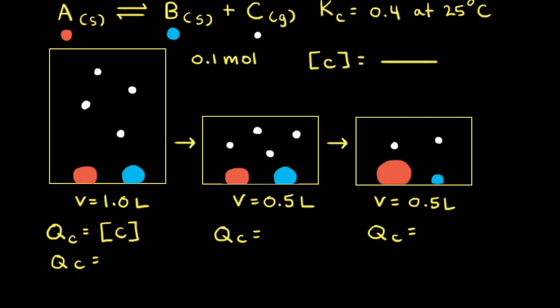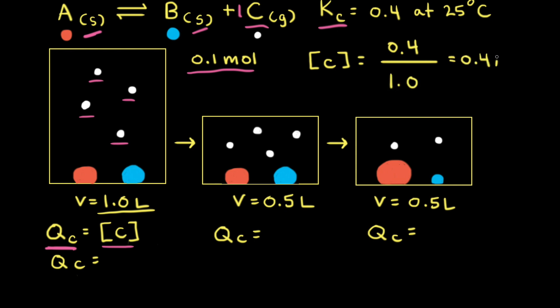To better understand what happens to a reaction mixture at equilibrium when a stress is placed on it, let's calculate the reaction quotient Q for these three particulate diagrams. The expression for QC has the same form as KC. Since solids are left out of the equilibrium constant expression, we only need to include the concentration of gas C. Since there's a coefficient of one in front of C, QC equals the concentration of C to the first power. There are four particles of C in the first diagram; if each particle represents 0.1 moles, that's 0.4 moles divided by a volume of 1.0 liter, giving a concentration of 0.4 molar. So QC equals 0.4.